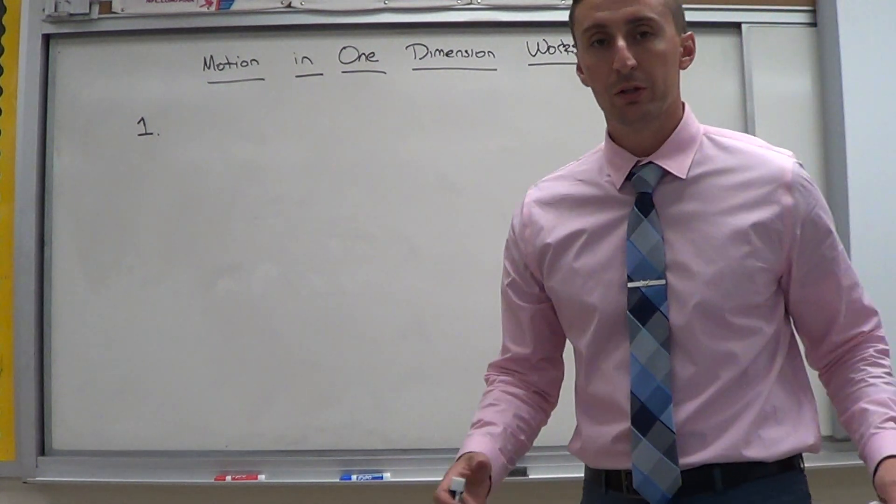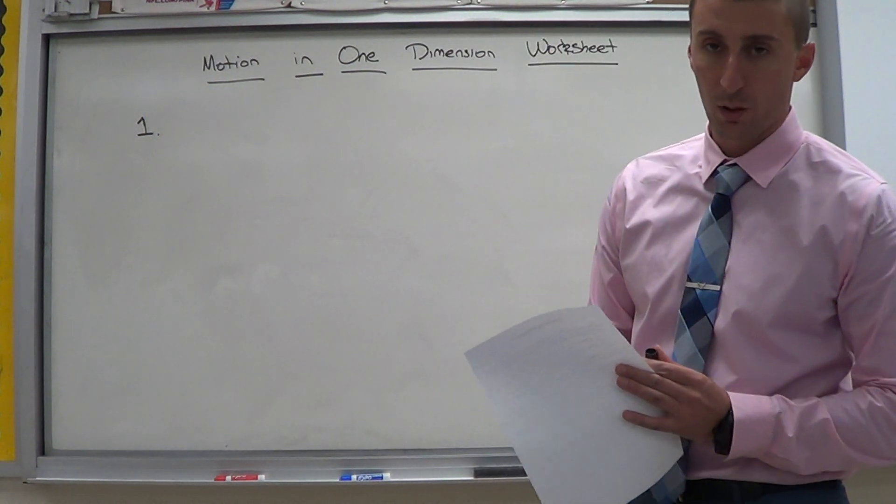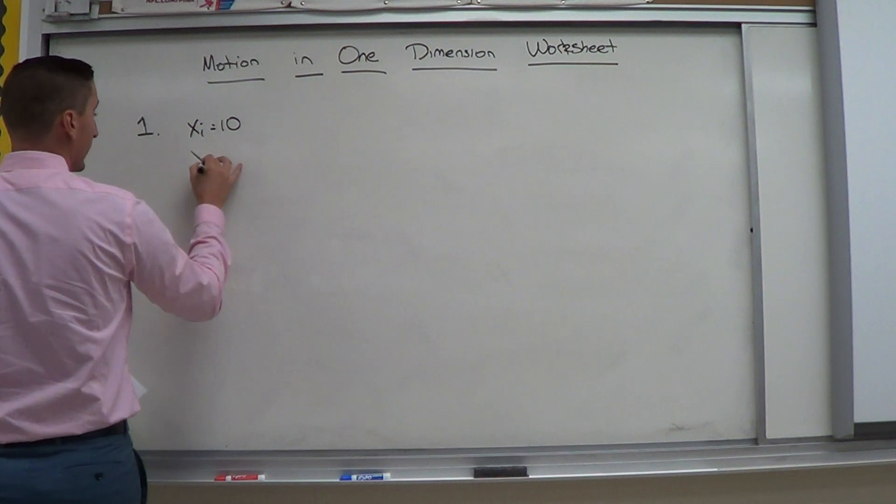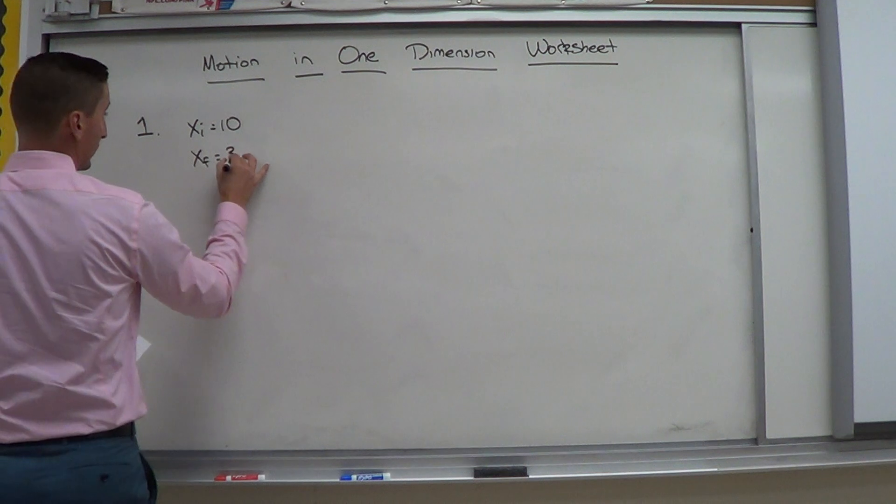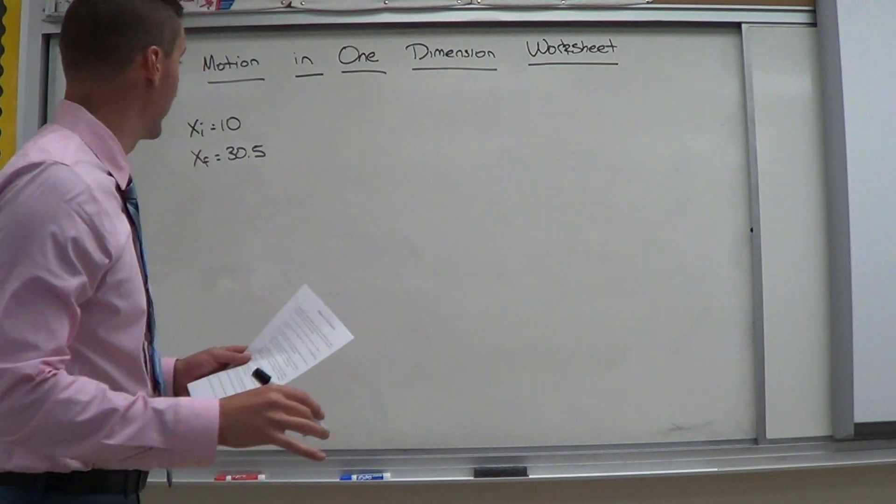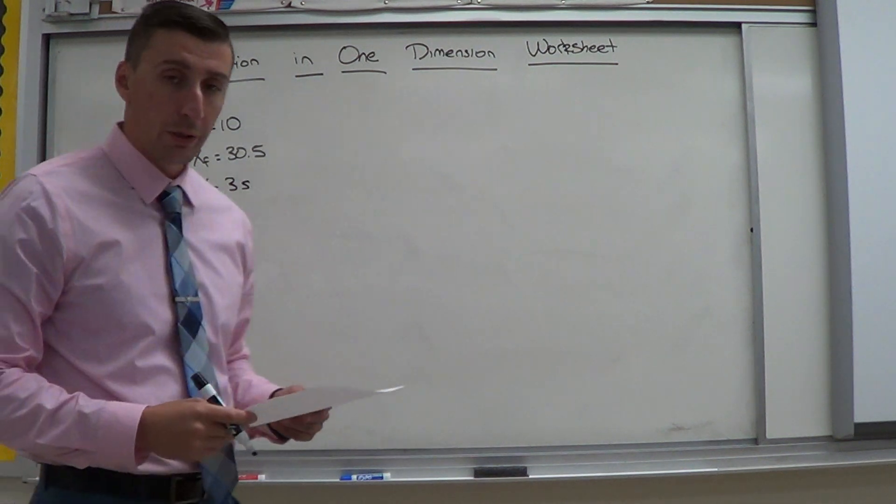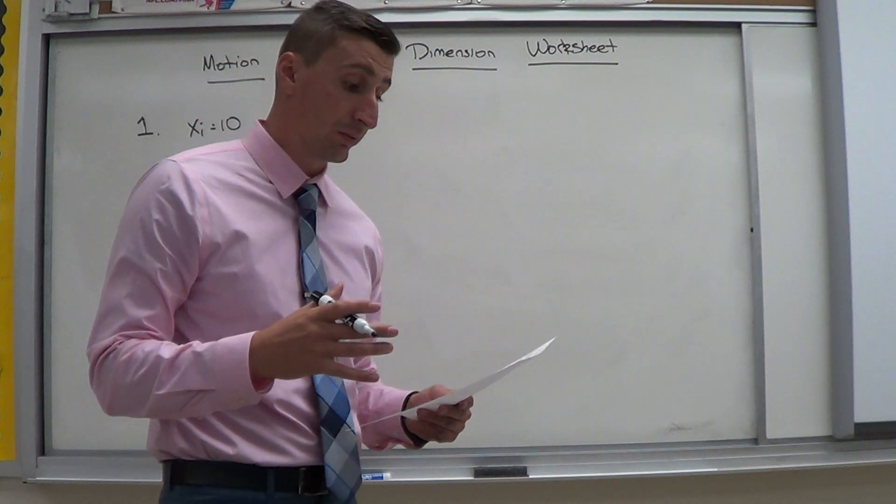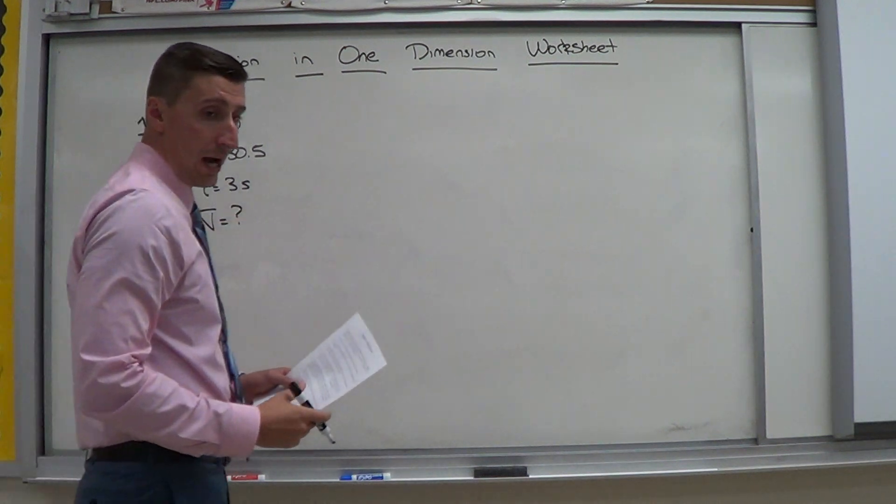Alright, so the first thing we want to do is list everything we know. So it gives us the initial position and the final position. So I have xi is 10, xf is 30.5. And it says that he does this in a 3 second time interval. So that gives me my time is 3 seconds. Last thing I want to do is look for what variable is it asking us to find which is average velocity. So now my problem is set up.